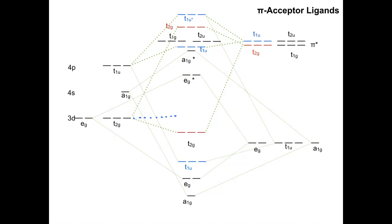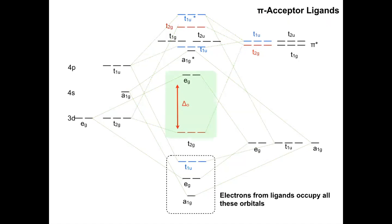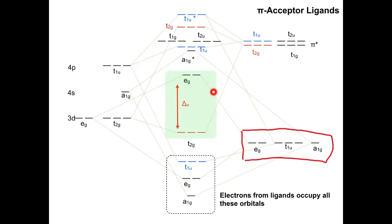That stabilization — turning T2g from non-bonding into a bonding orbital — overall gives rise to low spin complexes with pi accepting ligands, because we've stabilized the T2g. If we put electrons into our system, the six carbon monoxide ligands donate 12 electrons from sigma donating orbitals, filling those levels. The remaining electrons come from the metal. The presence of the pi accepting ligand stabilized and lowered the T2g, increasing the size of delta octahedral, which gives rise to low spin complexes.